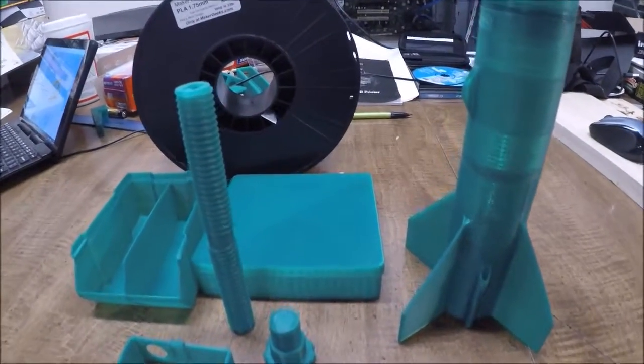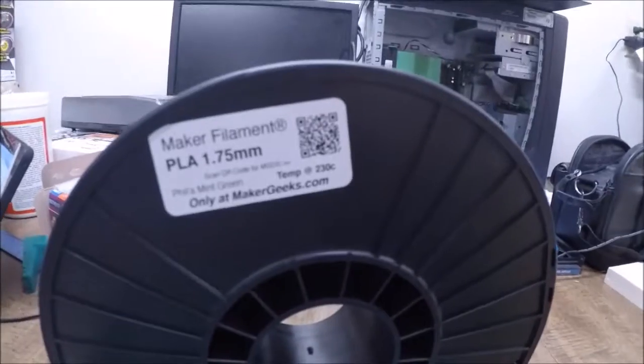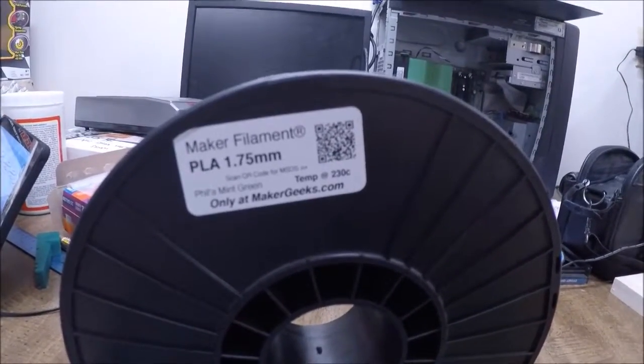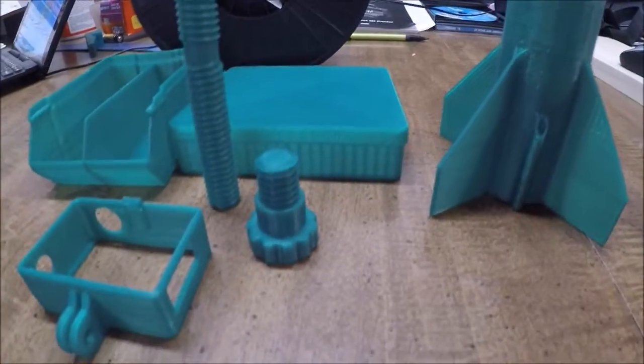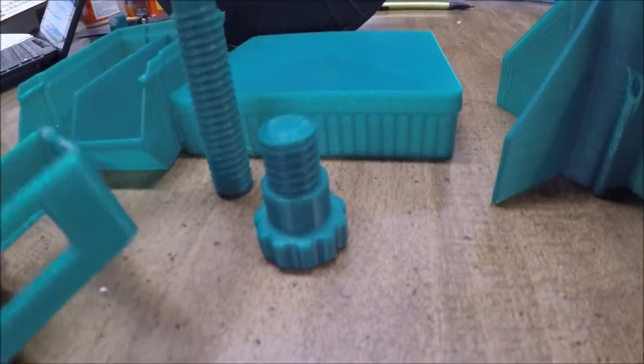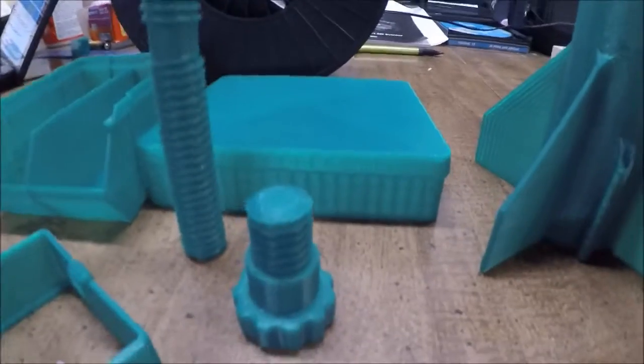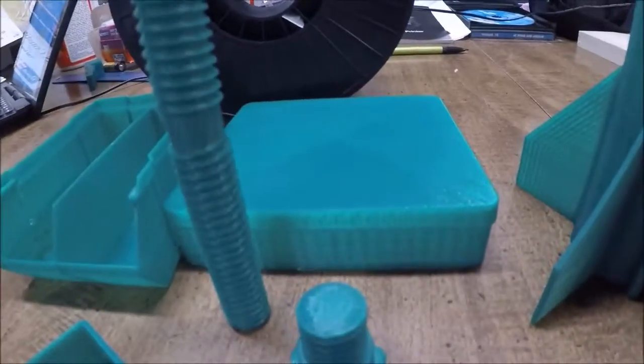Hey everybody, welcome back to Beginners Tech. Today I'm going to be doing a review on the MakerGeeks PLA filament in mint green. This filament was one of the first filaments I printed with my new printer. I have a WANHO Duplicator i3 and this filament is really nice. I had no problems with it. It prints at about 220 degrees Celsius with a bed temperature of 72.